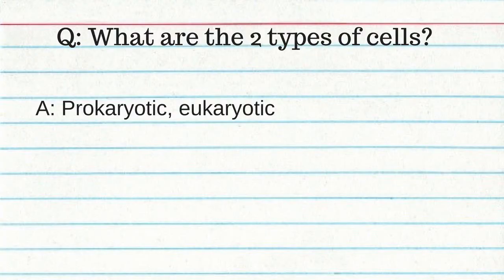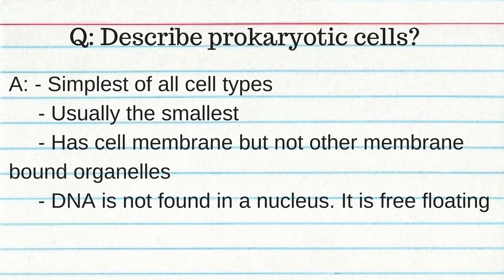What are two major types of cells? Prokaryotic and eukaryotic. Prokaryotic cells are the simplest of all cell types, usually the smallest. They have a cell membrane but no other membrane-bound organelles, and DNA is not found in the nucleus — it's free floating.